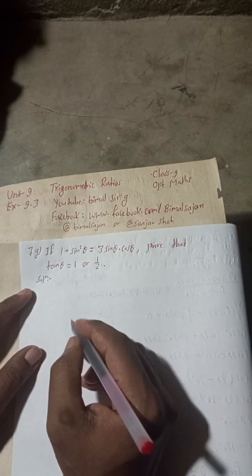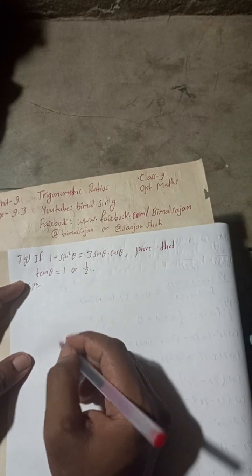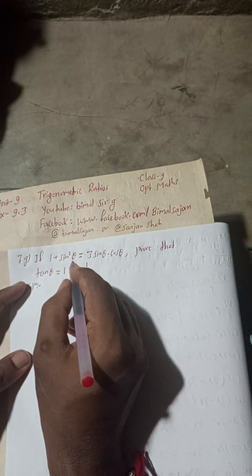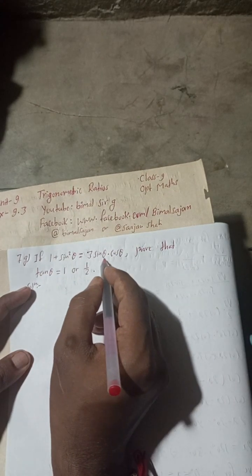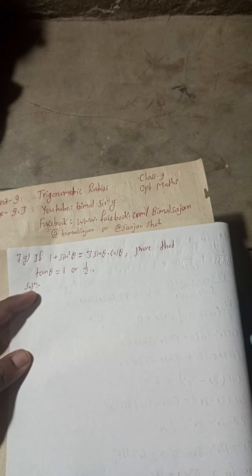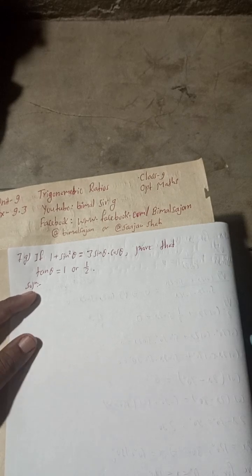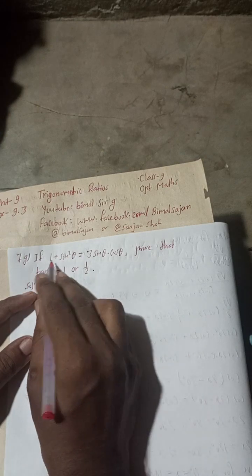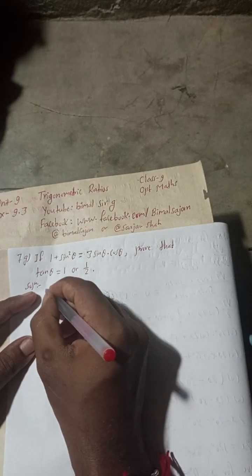Let's begin this solution now. If one plus sine squared theta is equal to three sine theta cos theta, prove that tan theta is equal to one or one by two. So, given here is: 1 + sin²θ = 3sinθcosθ.